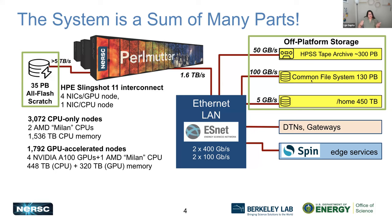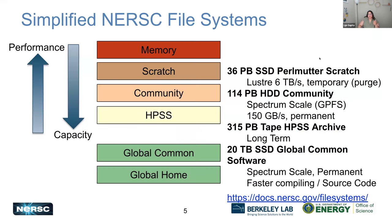There's the Community File System — sometimes called Common, but more often called the Community File System. Then there's Home and the Tape Archive. Memory per node is obviously the best. The next best is Scratch. If you have a simulation writing a bunch of data, you want it to write to Scratch, because that's the fastest and best performance you can get — reading and writing data from Scratch.